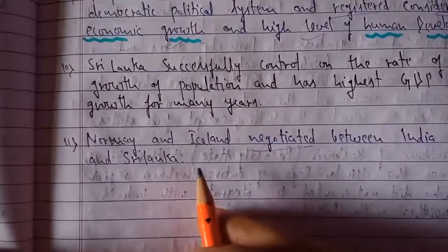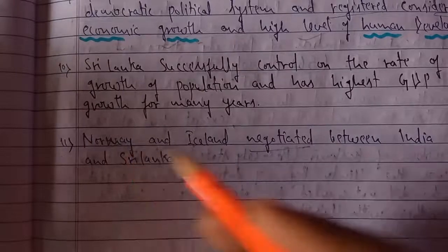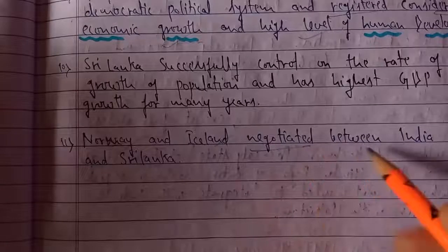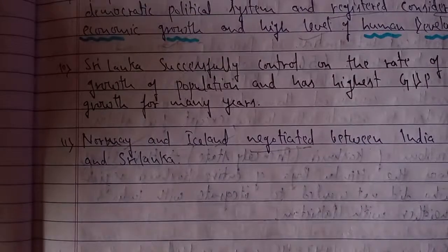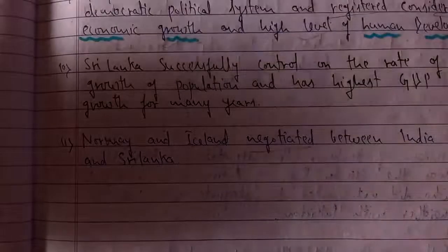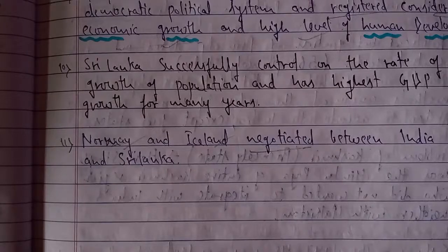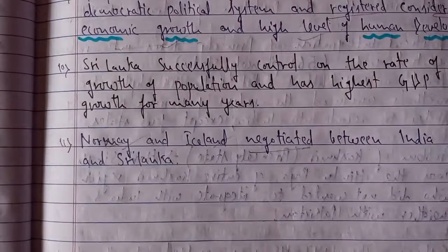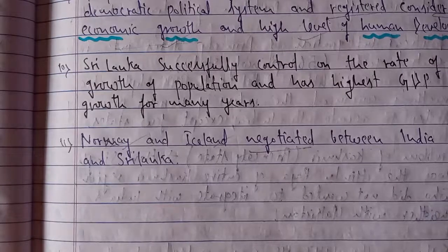Regarding the problems between the two ethnic groups and the violence and turmoil in Sri Lanka, Norway and Iceland negotiated between India and Sri Lanka, trying to resolve the problems relating to ethnic conflicts in the region. So today we discussed Nepal — how they established democracy after strong pro-democratic movements, removed the monarchy, and formed their constitution — and Sri Lanka — how ethnic groups created problems for the government, but they managed to maintain their democratic political system.